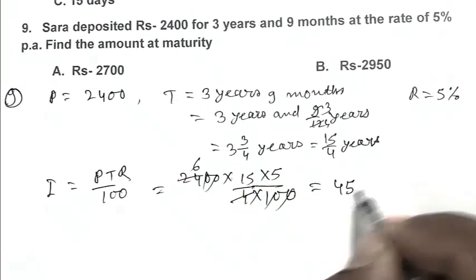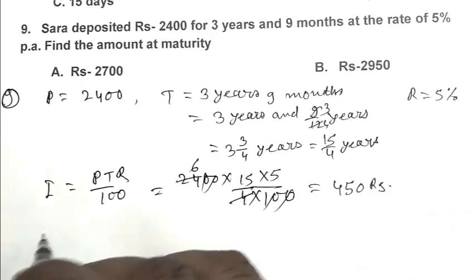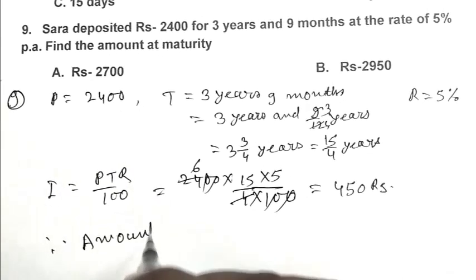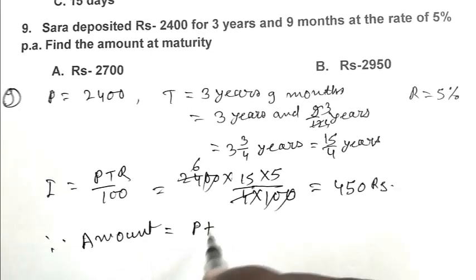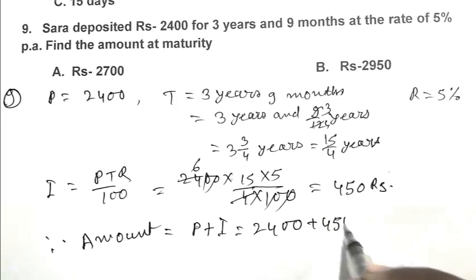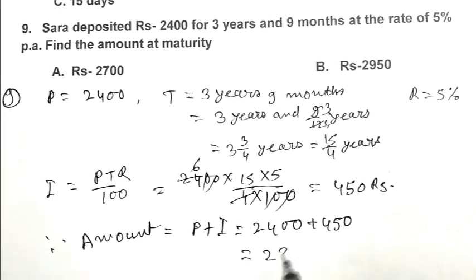Therefore amount is principal plus interest, that is 2400 plus 450. It is become 2850 rupees. So C is the right answer.